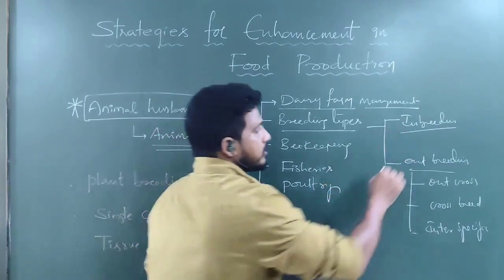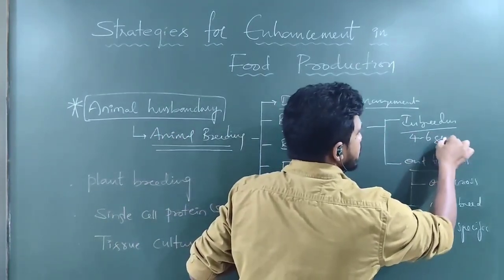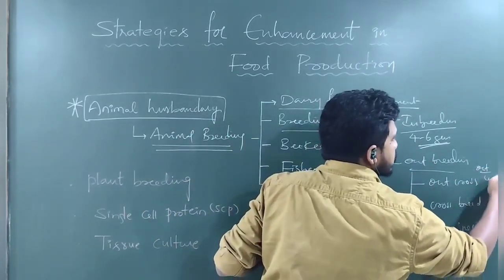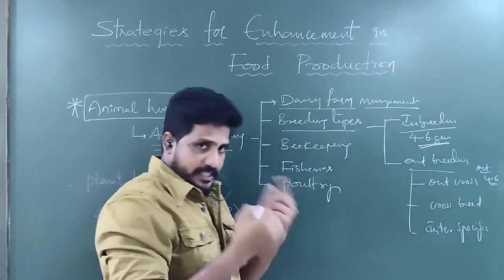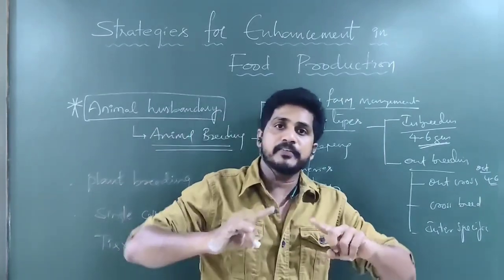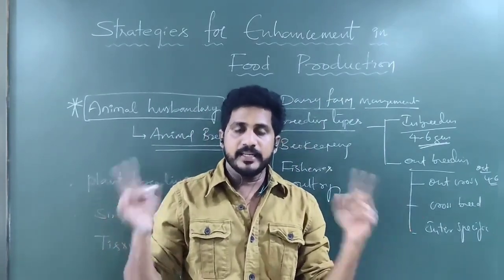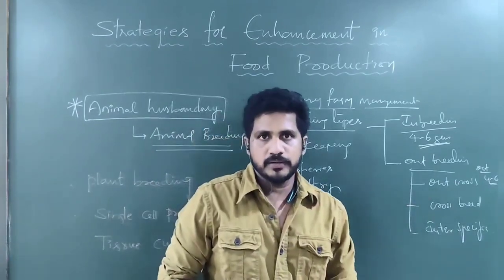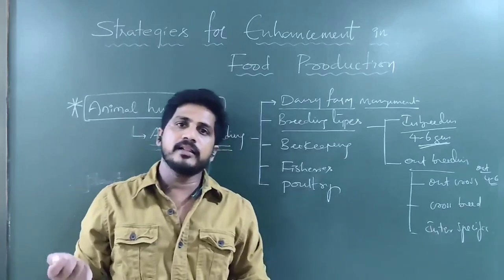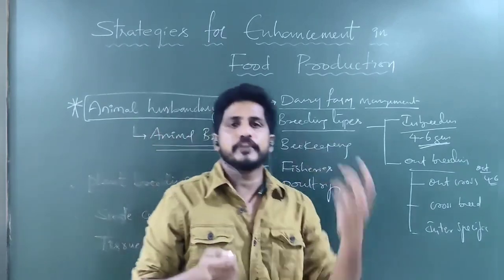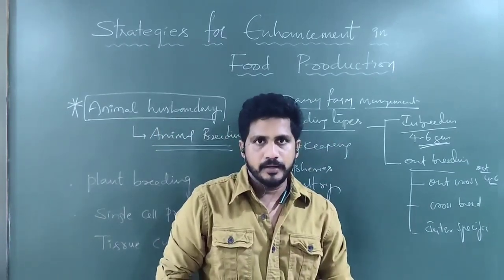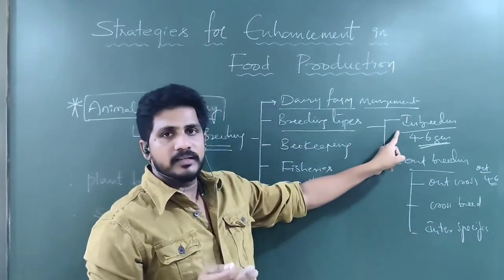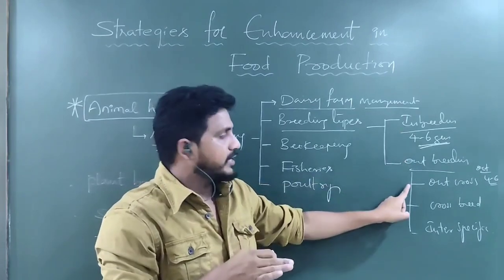In inbreeding, animals within four to six generations are related, but in outcross they are not related within four to six generations — marriages between two different families whose histories are not equal at all. In outcross, a superior male mates with a superior female for the best production. Inbreeding depression and homozygosity can be removed by just one mating of outcross.